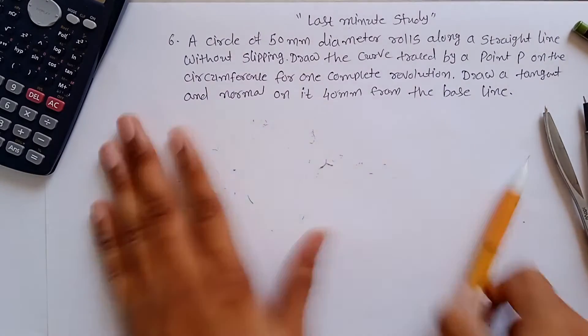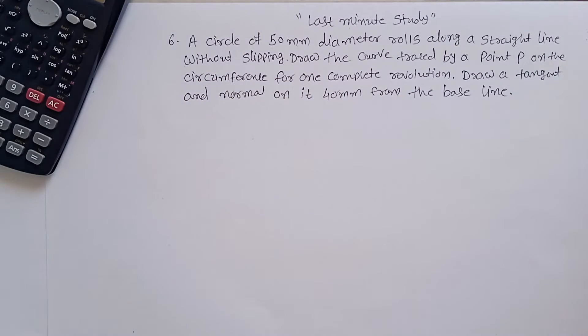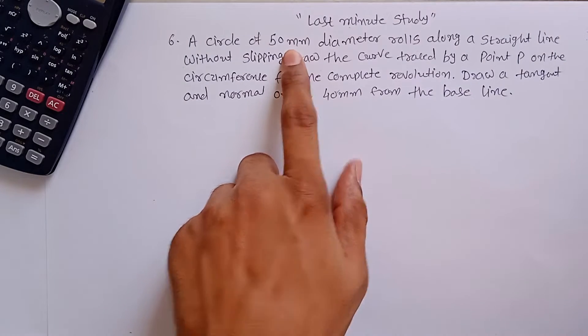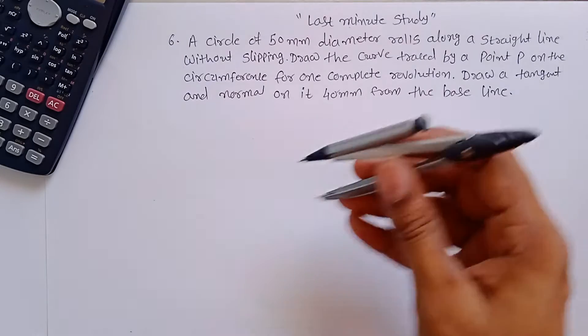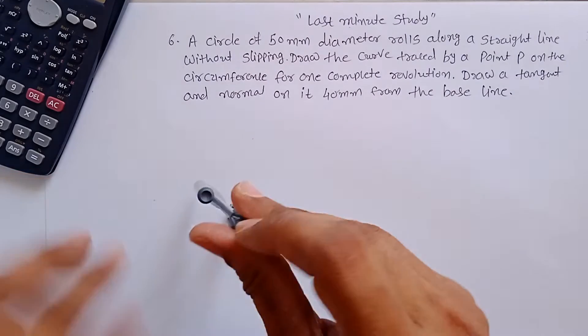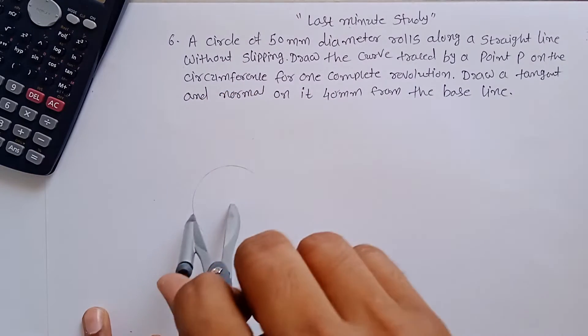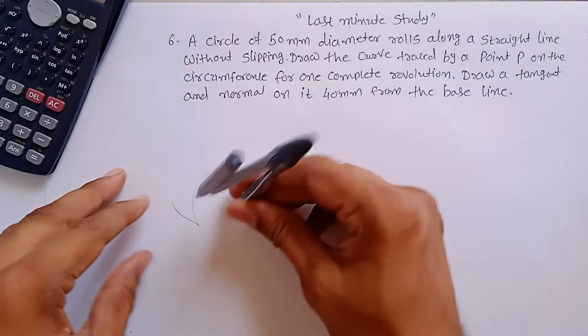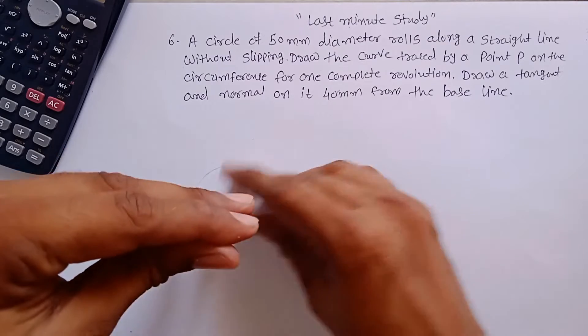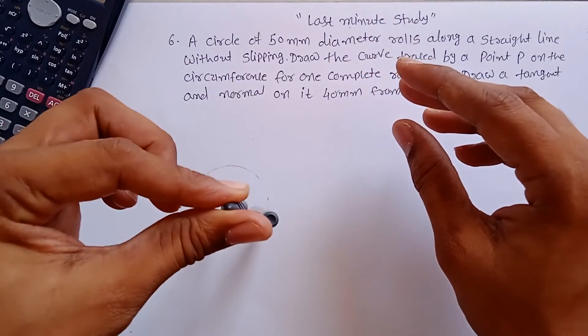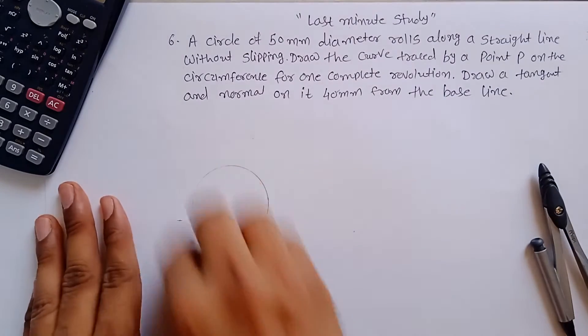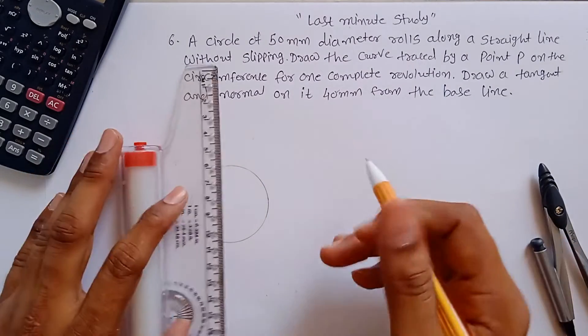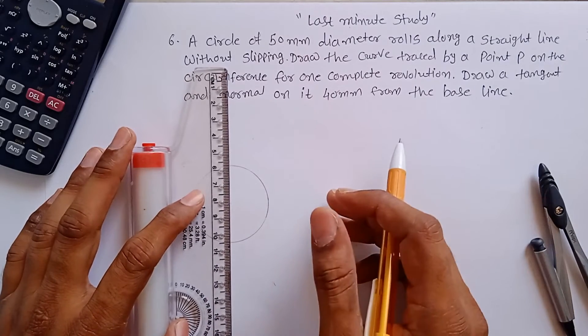To do so, we have to construct a circle first and then next steps. The circle diameter is 50mm, so the radius you have to take as 25mm and construct a circle like this and divide this circle into 12 equal parts.